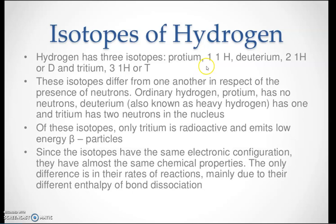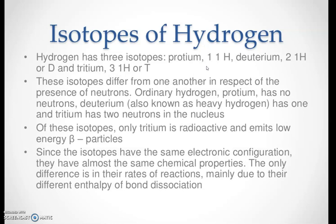To calculate the number of neutrons: mass number minus atomic number gives the number of neutrons. Ordinary hydrogen (protium) has no neutrons, deuterium has one neutron, and tritium has two neutrons. Deuterium is also known as heavy hydrogen. Of these isotopes, only tritium is radioactive and emits low-energy beta particles.